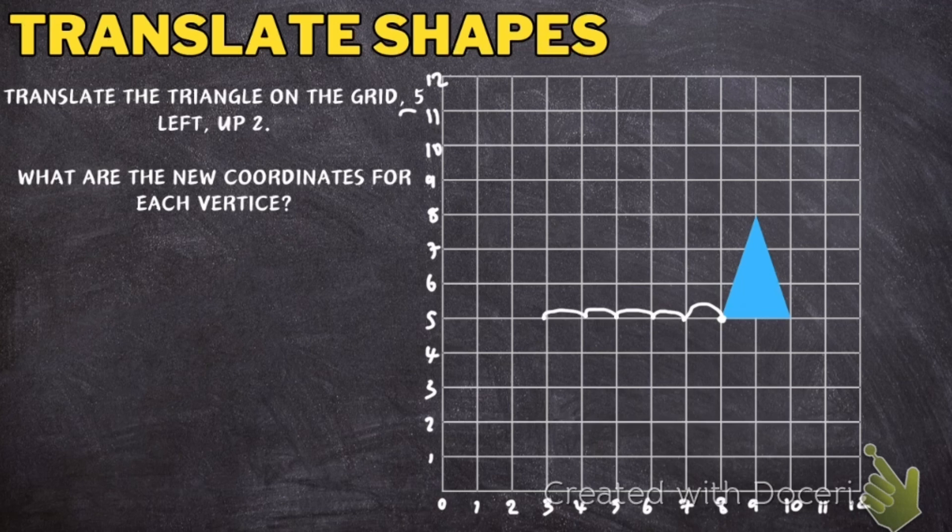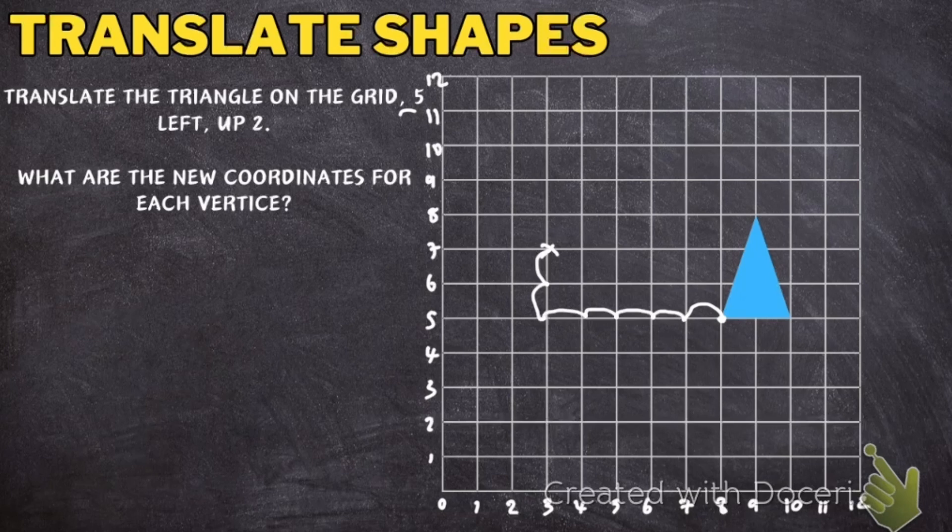Then I'm going to go up 2, 1, 2. So that corner is now going to be here. So that must mean the other corner is here. And then the top part of the triangle should be there.